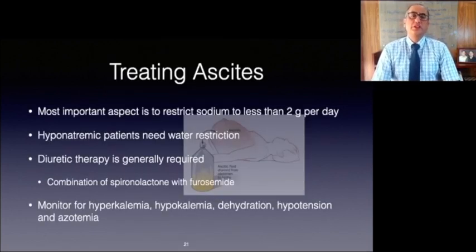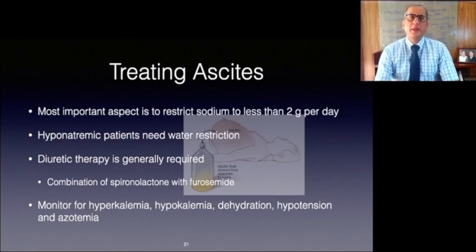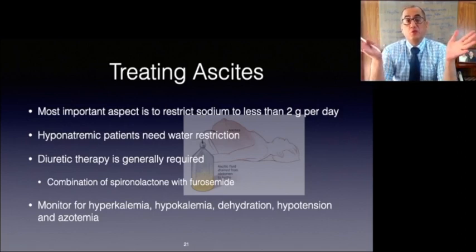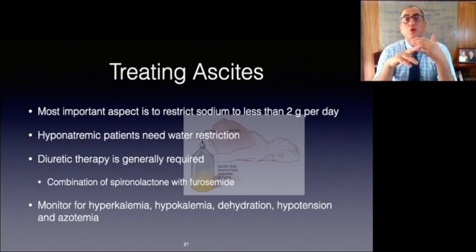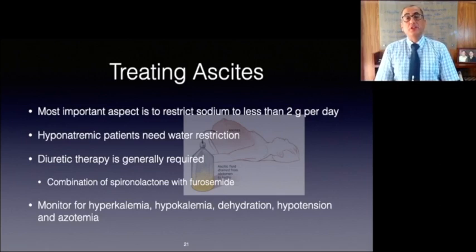The most important aspect in treating ascites is to restrict sodium to less than 2 grams per day. More restrictive regimens are difficult to accomplish in the outpatient setting. Water restriction is generally not necessary unless patients develop hyponatremia, in which case fluid restriction to less than 1.5 liters per day is generally adequate. Diuretic therapy to reduce sodium retention by the kidneys is generally required, achieved through blocking the effects of the salt regulatory hormone aldosterone. A loop diuretic functions at the ascending limb of the loop of Henle, so generally a combination of spironolactone or another potassium-sparing diuretic along with a loop diuretic is required for complete diuresis. Patients need to be monitored closely for side effects which include hyponatremia, hyperkalemia, hypokalemia, dehydration, hypotension, and azotemia.